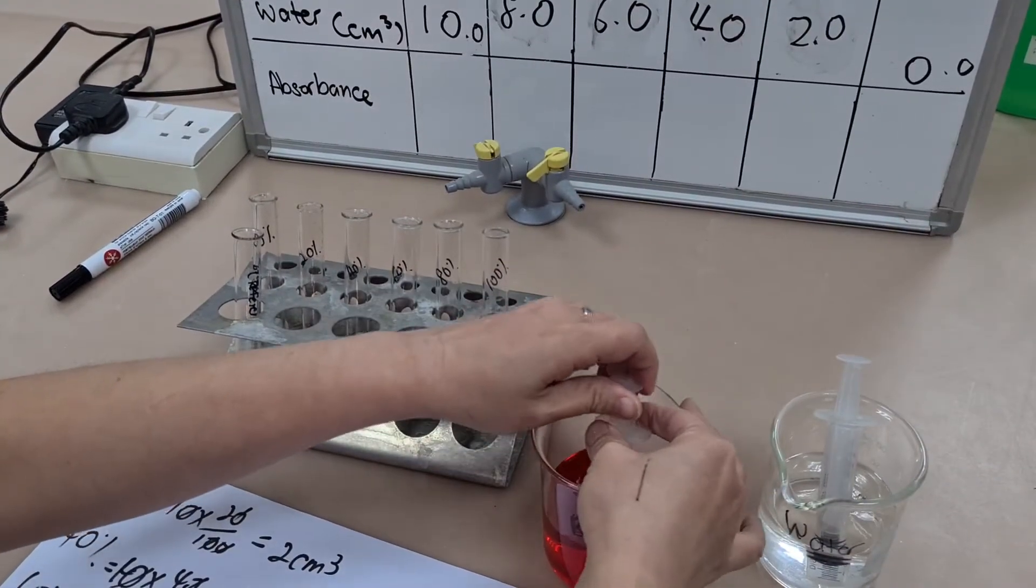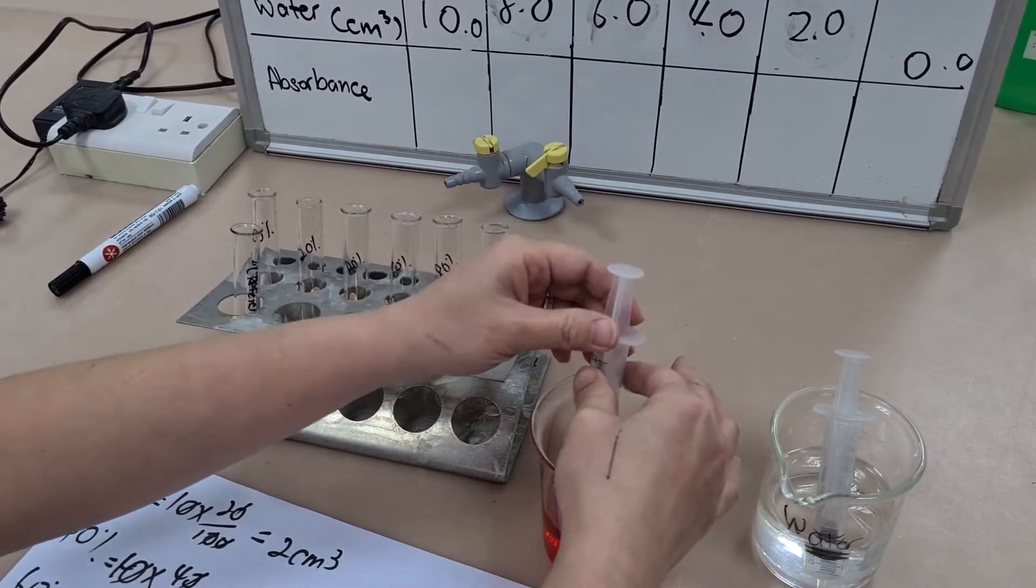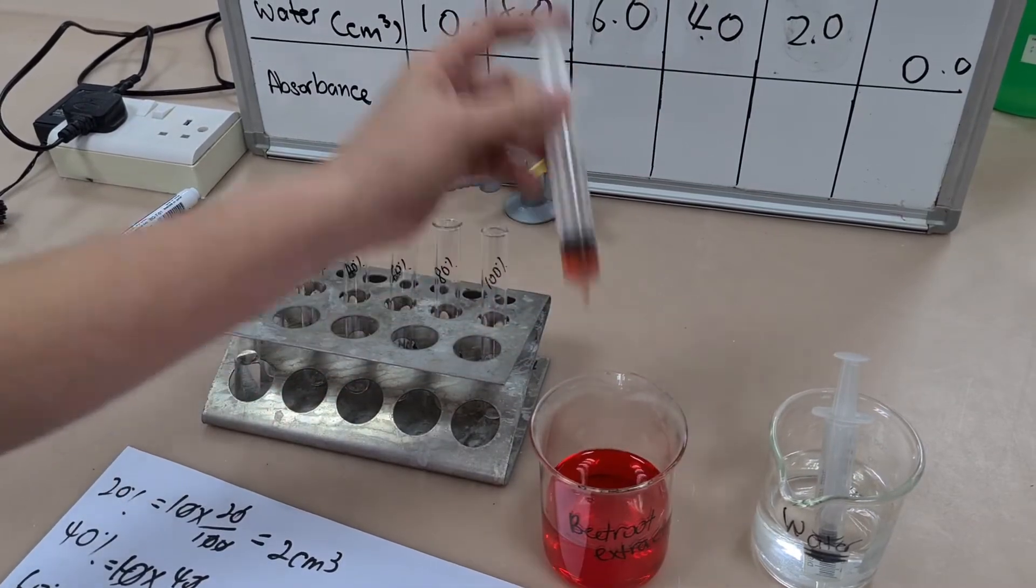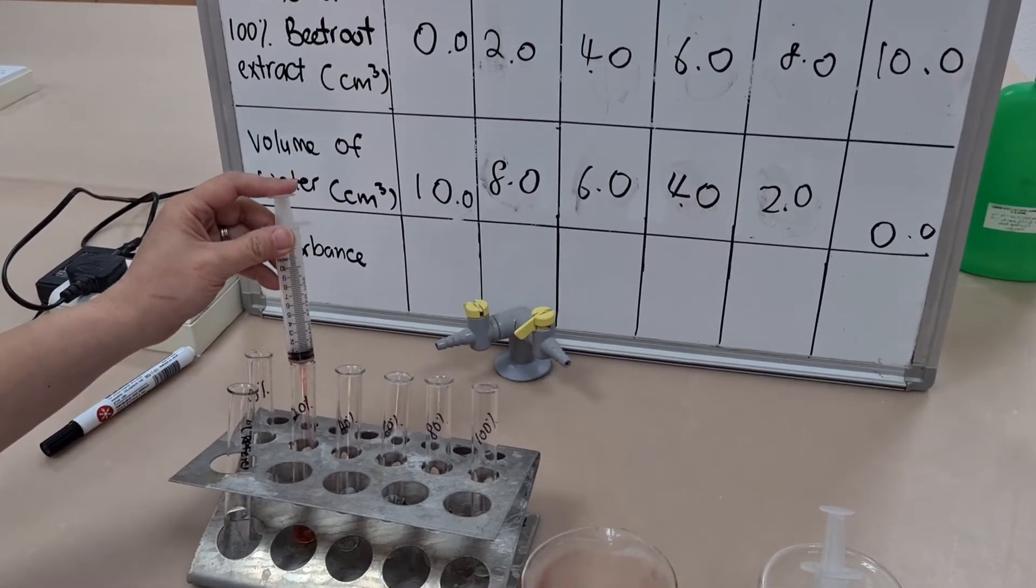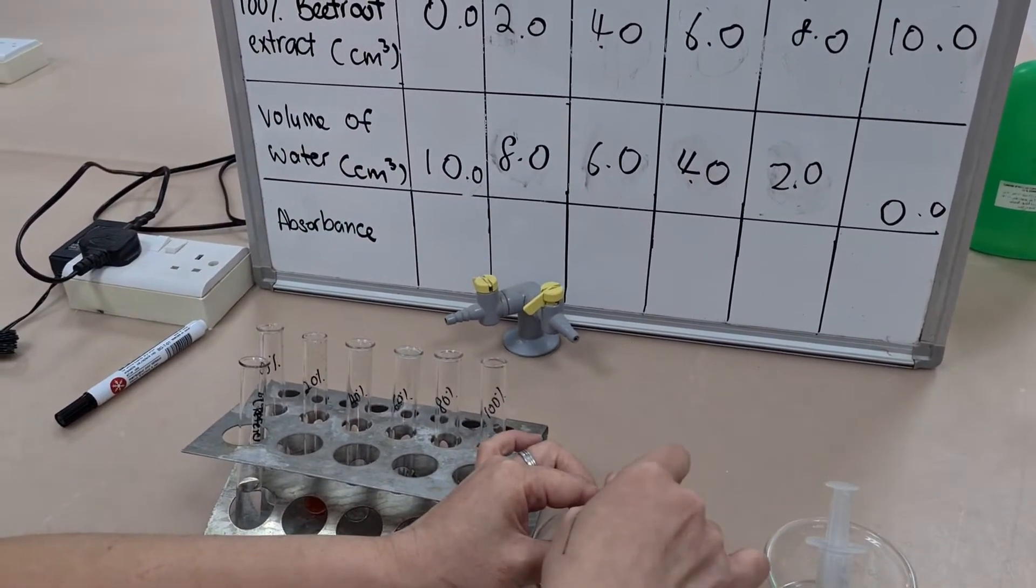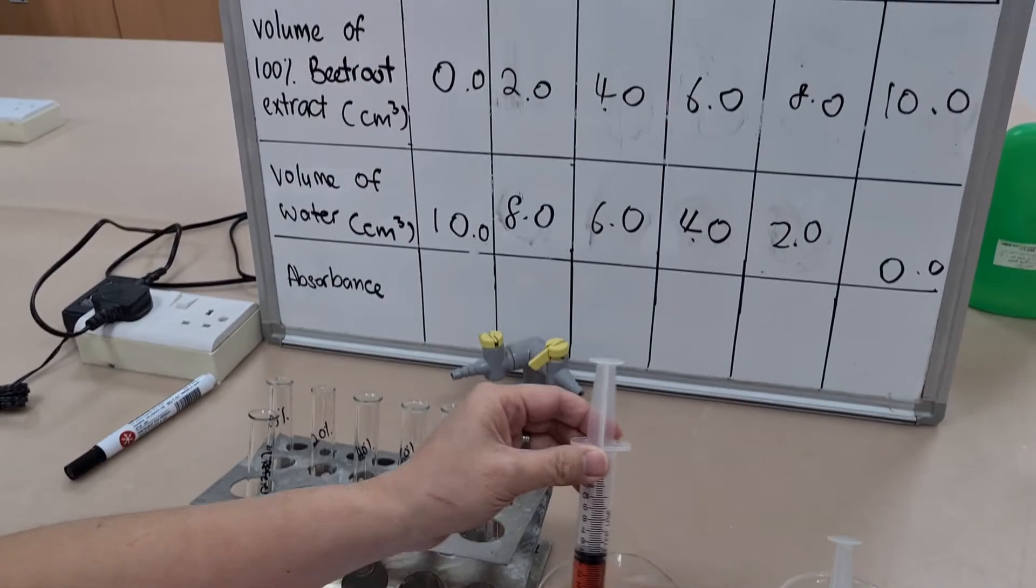We'll make six dilutions. We always need at least five because if we're going to plot anything on a graph, we need at least five data points. And I'm going to make 10 mils of each dilution.